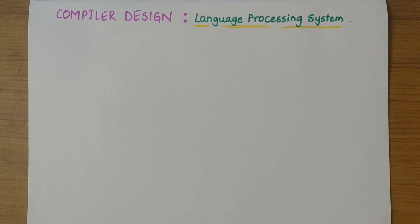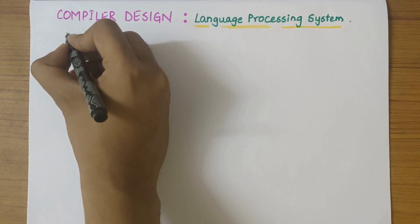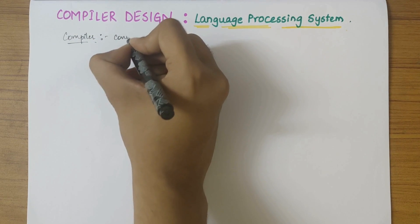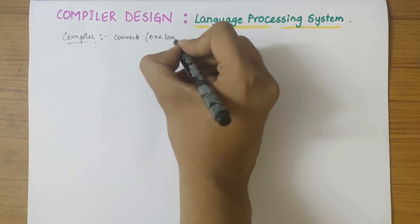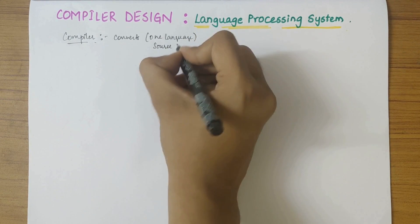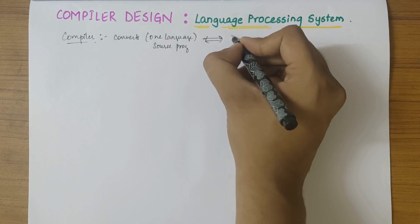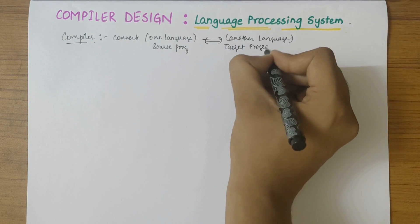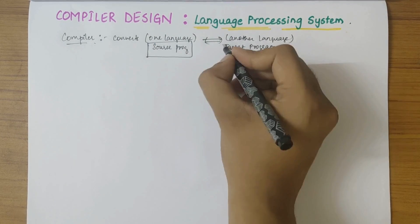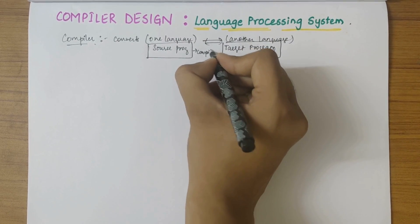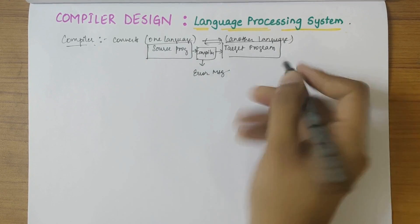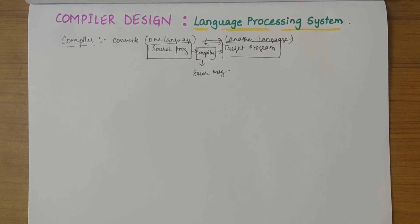In this video we'll be looking into the language processing system topic under compiler design. Before proceeding, we need to understand the definition of a compiler. A compiler is a program that converts the source program of one language to an equivalent program of another language, also called the target program. The compiler performs this conversion and if there are any errors, error messages are shown.